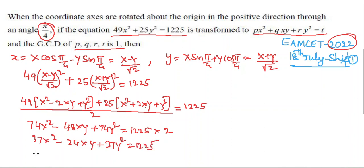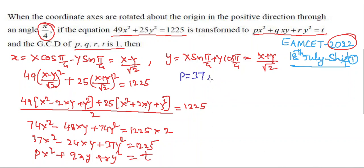Comparing with Px² + Qxy + Ry² = T, we get P = 37, Q = −24, R = 37, and T = 1225.